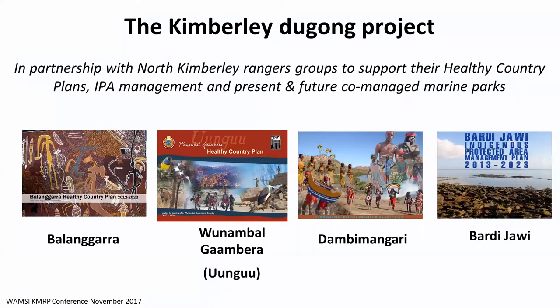This is clearly a very important project that involved Indigenous engagement. Dugong are a cultural resource, which is highly recognized by Pete and his team. In initiating the project he worked predominantly with four groups across the north and western Kimberley: Falangara, Wanamagambra, Dablamangari, and Bardi Jawi. Dugong are identified in all of their healthy country plans as a key asset, with their own management objectives and targets.